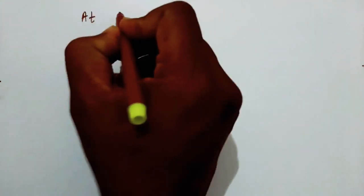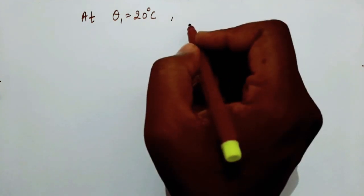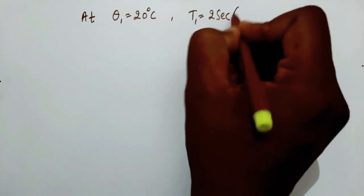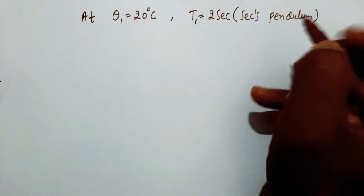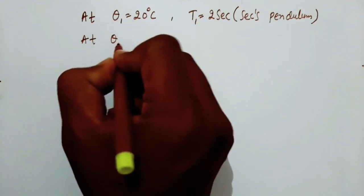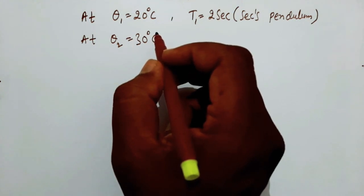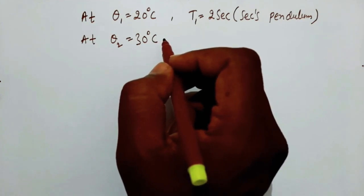In this problem, a brass pendulum shows correct time at 20 degree Celsius, so theta 1 is equal to 20 degree Celsius. The time period of the pendulum is T1 equal to 2 seconds, because it is a seconds pendulum. At theta 2 equal to 30 degree Celsius, when the temperature rises, it loses 8.212 seconds per day.